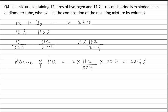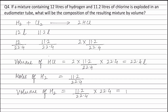Moles of hydrogen that took part in the reaction is 11.2 divided by 22.4 moles. Therefore, volume of hydrogen that has taken part in the reaction is (11.2 / 22.4) multiplied by molar volume 22.4 liters, which equals 11.2 liters. So volume of hydrogen used up in the reaction is 11.2 liters. Therefore, volume of hydrogen left is equal to 12 liters minus 11.2 liters, which equals 0.8 liters.